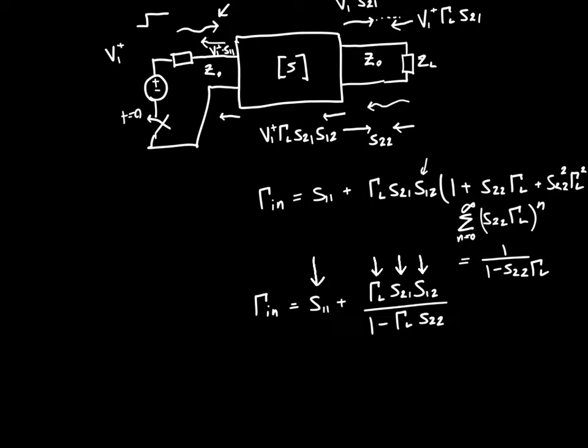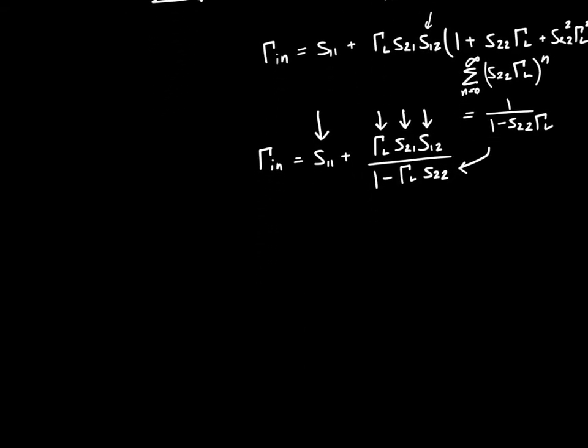And then it's infinitely reflected back and forth and back and forth. And that's where this geometric series comes in. And it gives us on the, on the denominator, one minus gamma L S22. And that's just, the gamma L S22 term is pretty easy to remember because you're bouncing off the load. Well, what value do you bounce off of? Well, with gamma L. And you're bouncing off of the output of the two-port network, which bounces off with a value S22. So the whole equation is fairly straightforward to remember if you just understand what it is that's going on in terms of reflections in time.